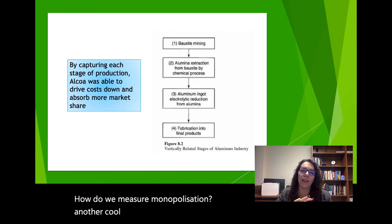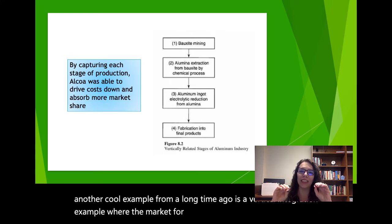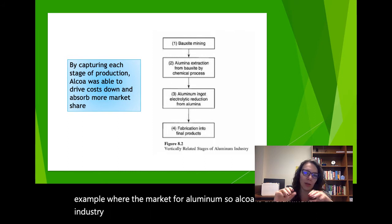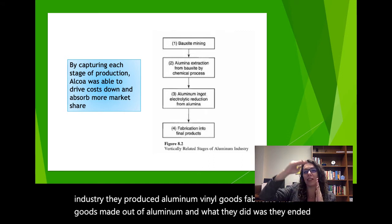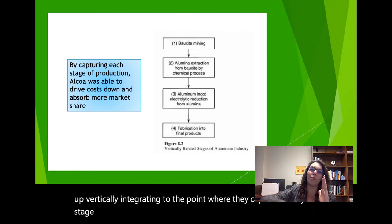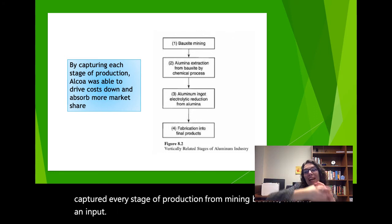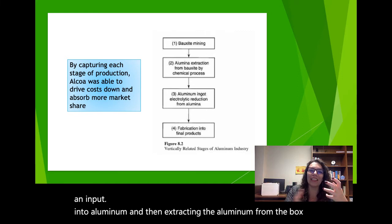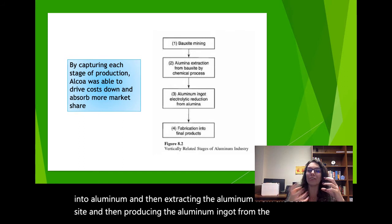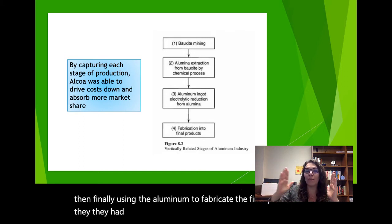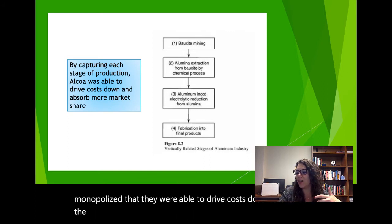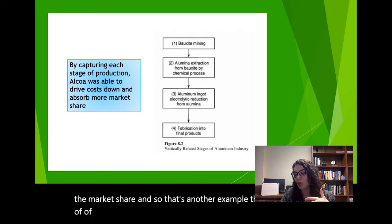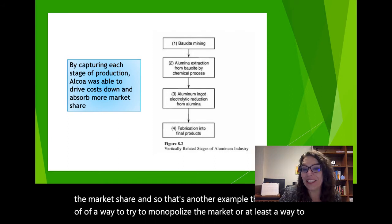Another example is a vertical integration case for the aluminum market. Alcoa vertically integrated to the point where they captured every stage of production — from mining bauxite, extracting alumina from the bauxite, producing the aluminum ingot, and finally fabricating the final products. They had the entire market monopolized and were able to drive costs down and absorb market share.